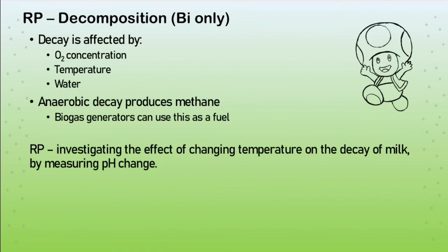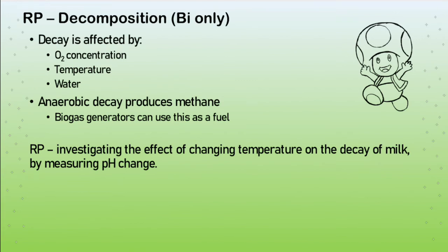By changing conditions slightly, we can manipulate decomposers to produce methane — a biogas produced biologically. In chemistry you look at sewage treatment, and part of that process is using anaerobic decay to produce methane, a fuel we can use to produce energy. There's also a required practical investigating the effect of changing temperature on the decay of milk by measuring pH change.